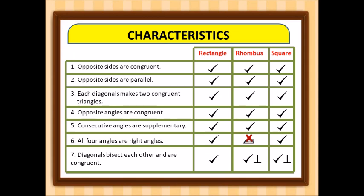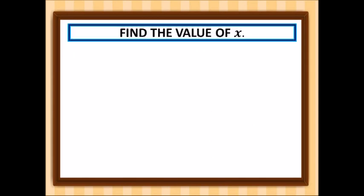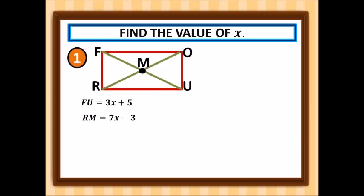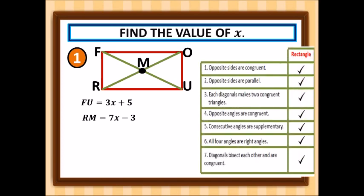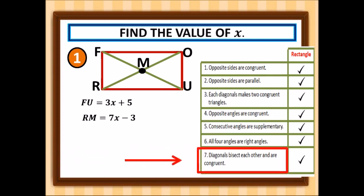Now let's find the value of x. We have rectangle FOUR with diagonal FU and diagonal RO intersecting at point M. FU is 3x + 5 and RM is equal to 7x − 3. The particular characteristic we apply here is number seven: diagonals bisect each other and are congruent.